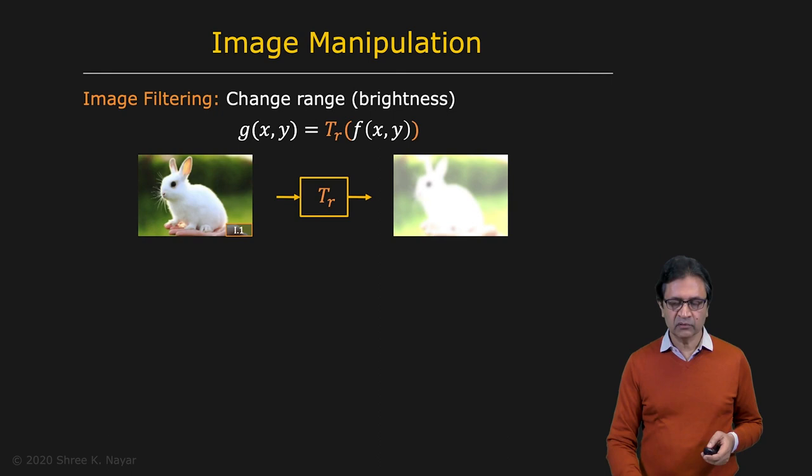So they come in two flavors. The first is what we discussed during our lectures on image processing, which is image filtering. And in the case of image filtering, you have an input image F of X, Y, and you have an output image G of X, Y.